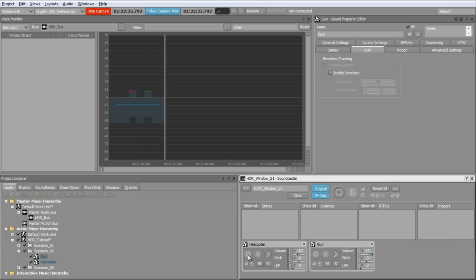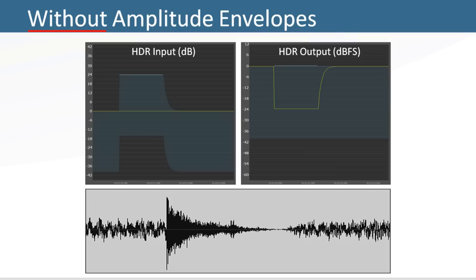As we can hear, there is a long gap during the gunshot decay where the helicopter is ducked down too much to sound natural. This happens because WISE is unaware of the gunshot's amplitude envelope. As we can see in this representation, the final output of WISE goes unusually low during the gun's decay.